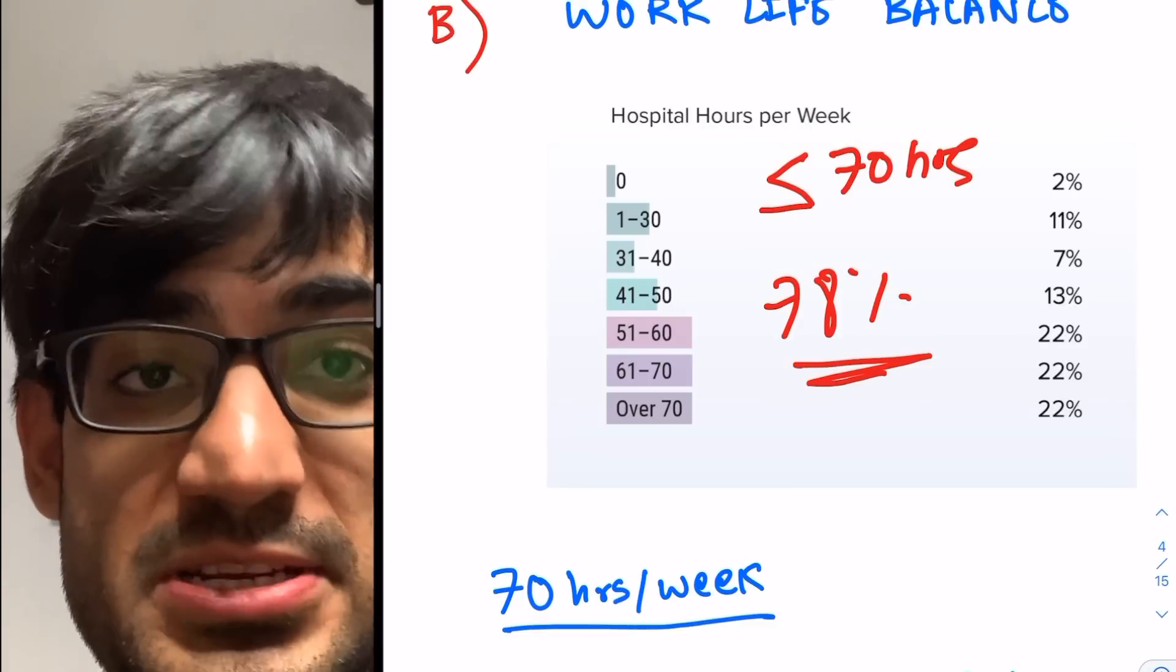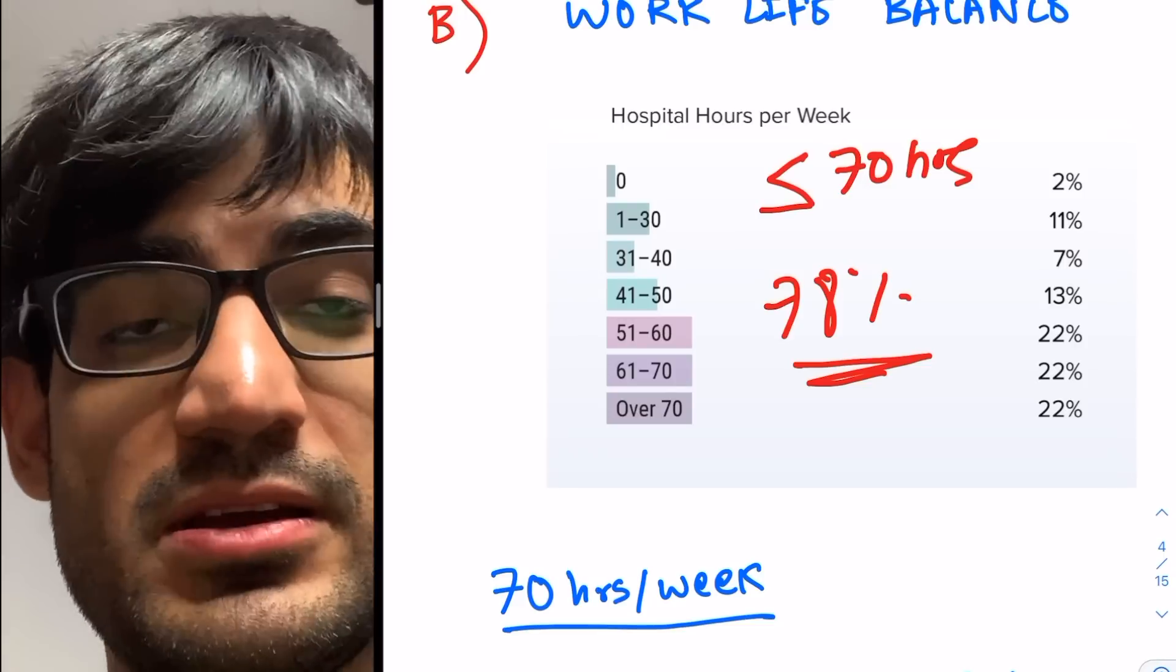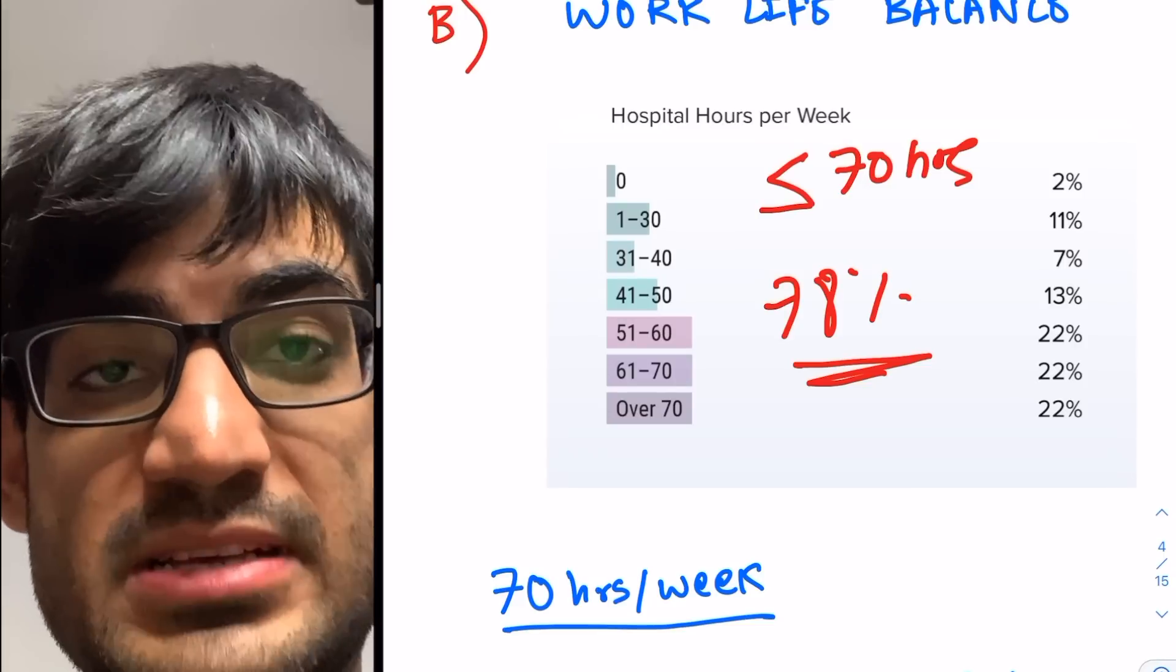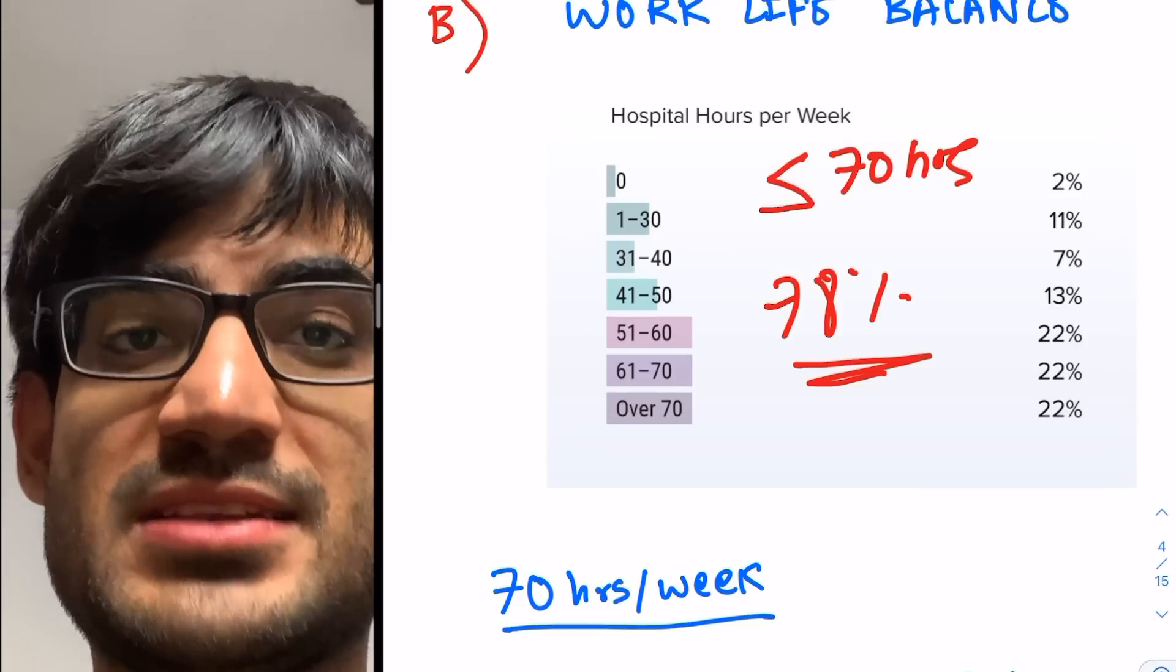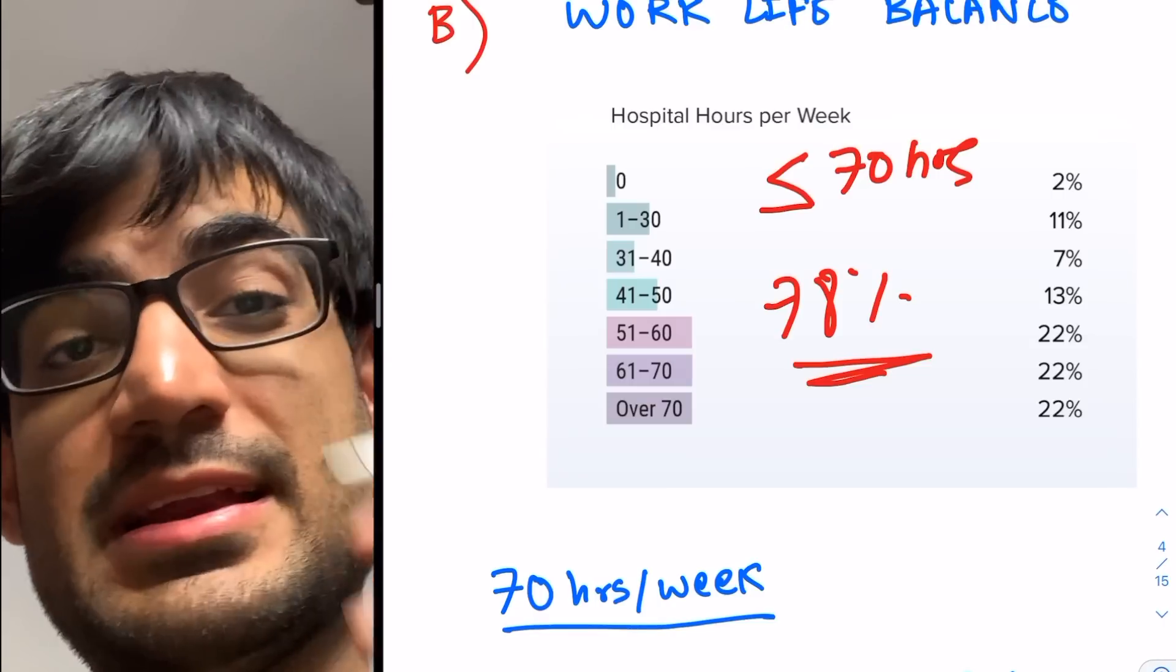In your first years, PGY one years, you'll be working about 70 hours. You'll be working a lot. And as you progress along that ladder of PGYs, as you become more senior, you'll be working less and less.